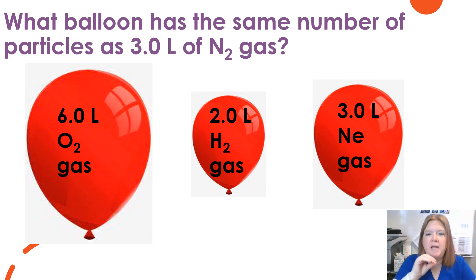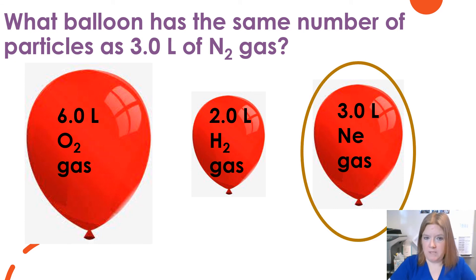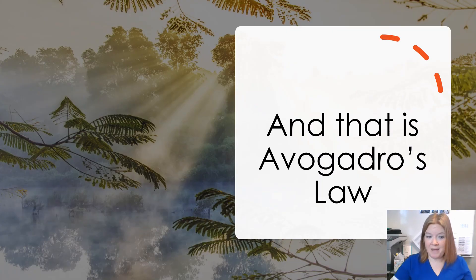So what balloon has the same number of particles as 3.0 liters of nitrogen gas? So remember, same number of particles at the same temperature and pressure is related to the volume. So which one has the same volume? 3.0 liters.